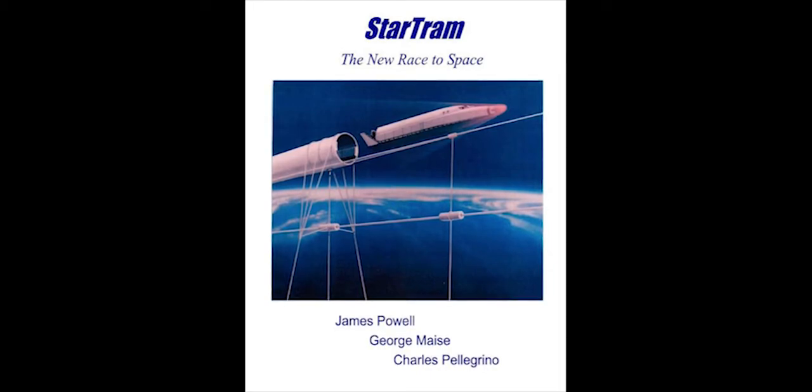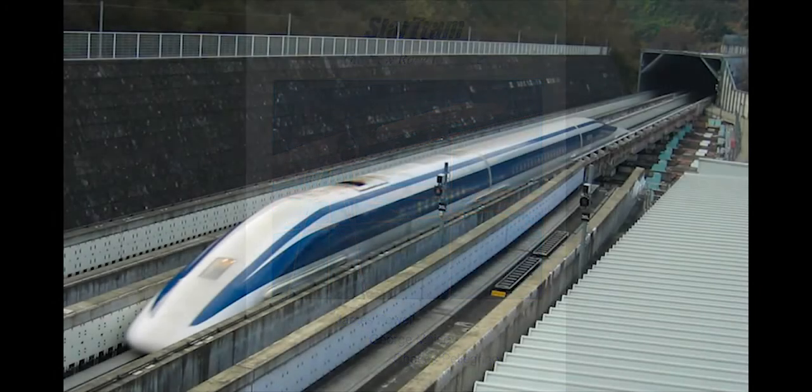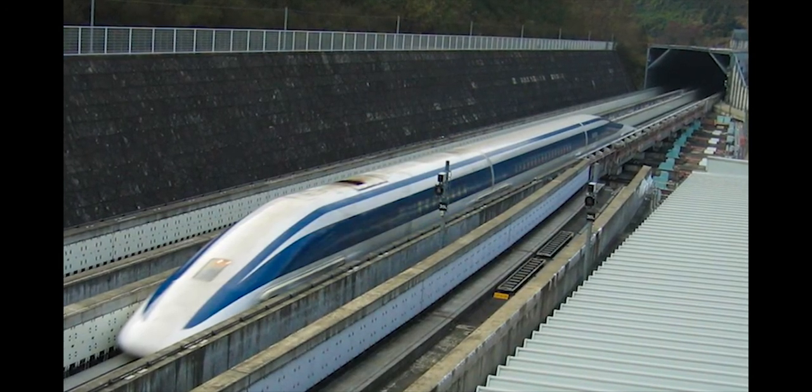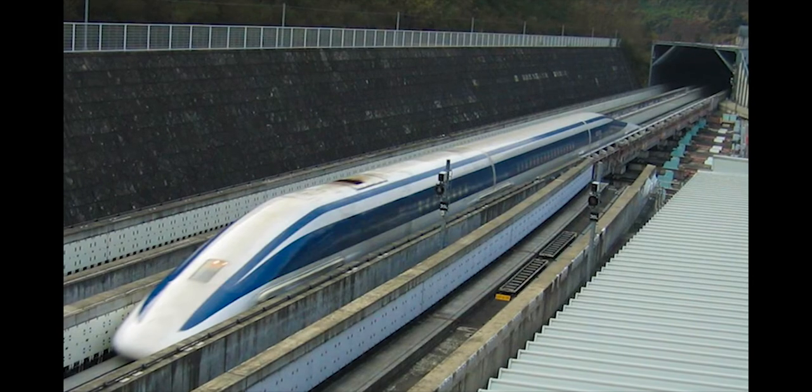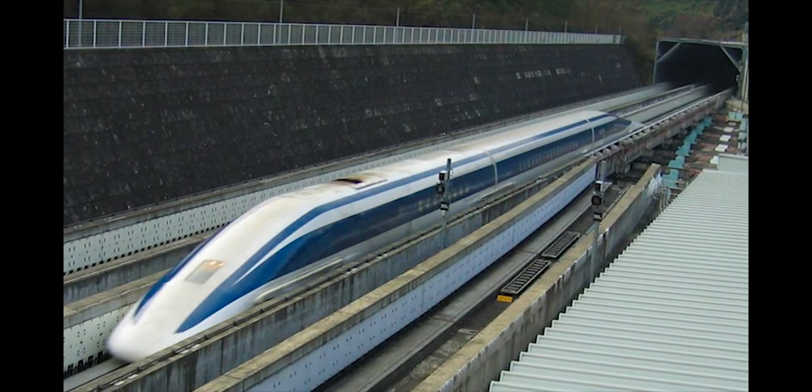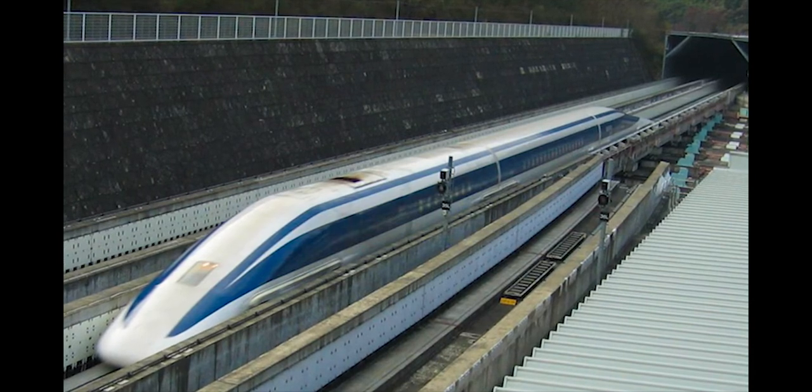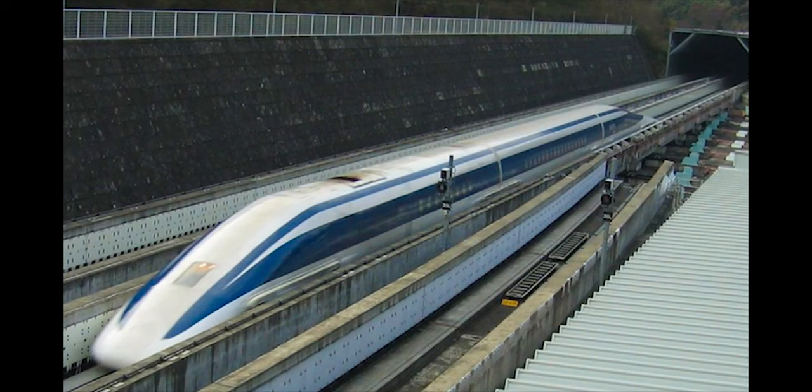I invented superconducting maglev in 1966. The first generation design is now operating in Japan, reaching speeds of 370 miles an hour. They're building a 300-mile route between Tokyo and Osaka which will carry 100,000 passengers per day at a trip time of one hour. So it's a proven technology.